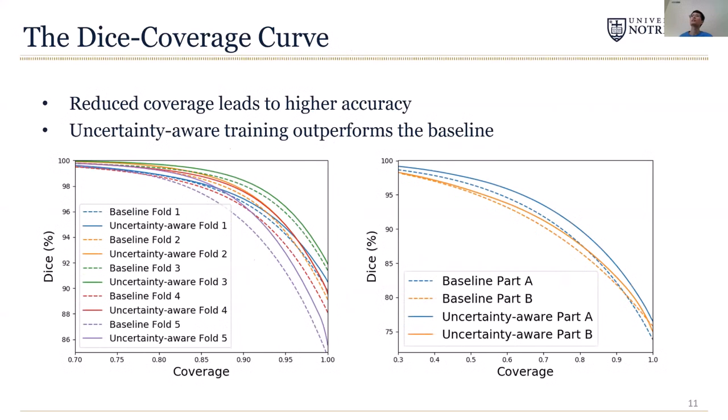Now let's look at the experiment results. We did the experiment on one 3D segmentation task and one 2D segmentation task. The figures below are the dice coverage curves, where the x-axis is the coverage c and the y-axis is the dice coefficient. We can see that with reduced coverage, the dice improved significantly. Meanwhile, our uncertainty-aware training can achieve higher dice coefficient than the baseline.